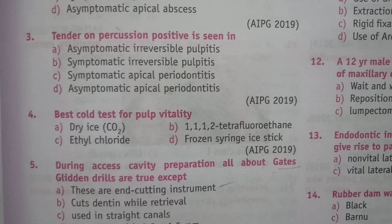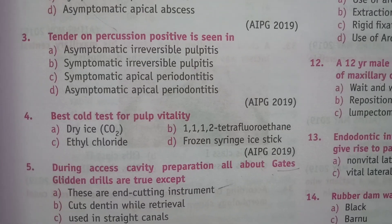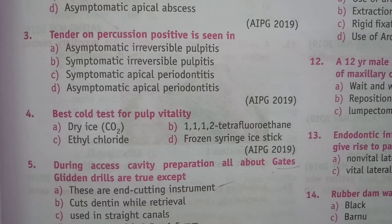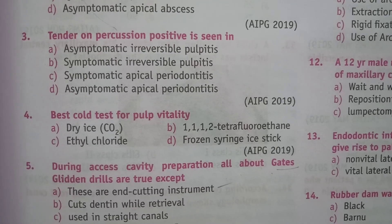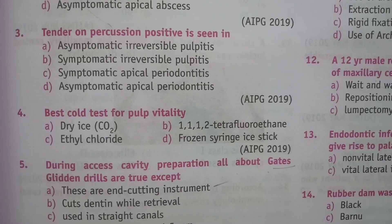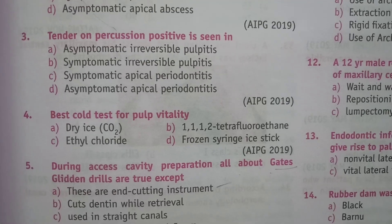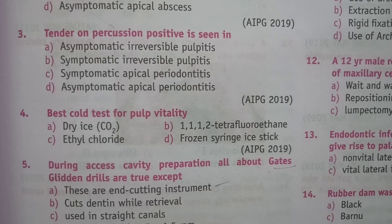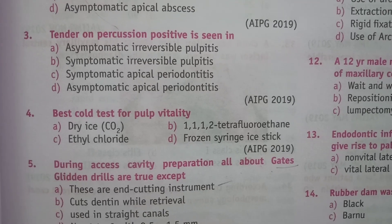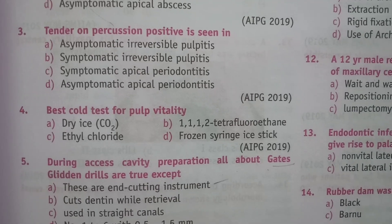Next question: what is the best cold test for pulp vitality? Options: A, dry ice; 1,1,1,2-tetrafluoroethane; ethyl chloride; frozen syringe ice stick. The answer is A, dry ice.